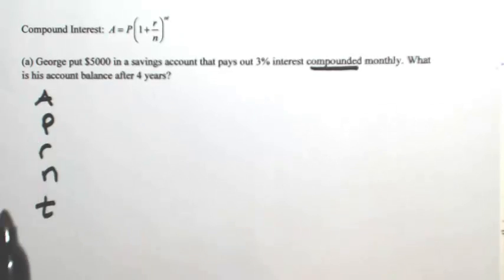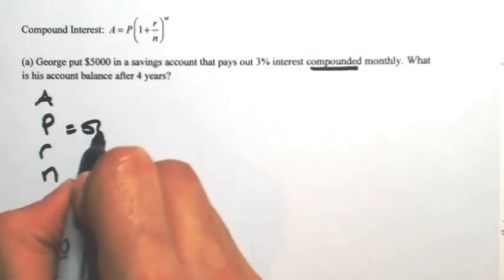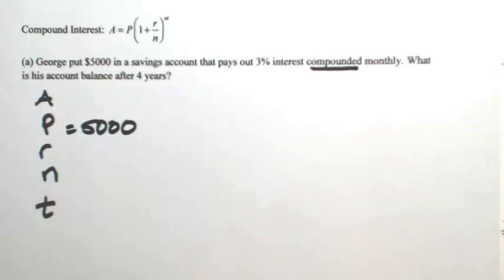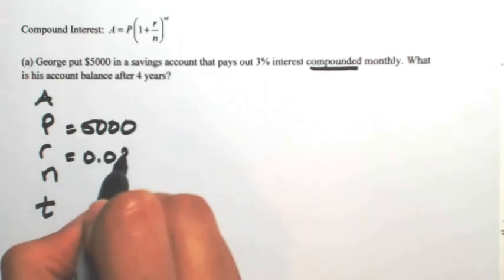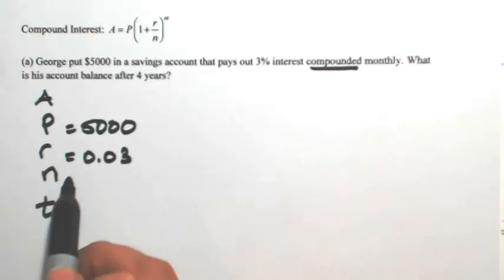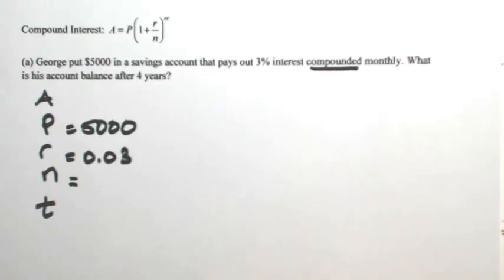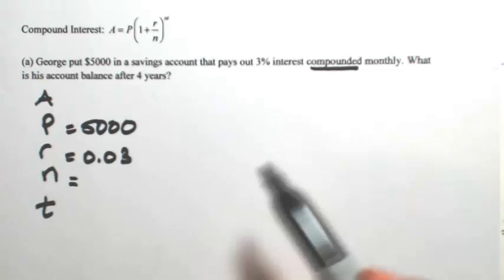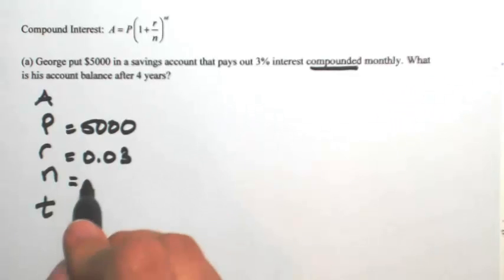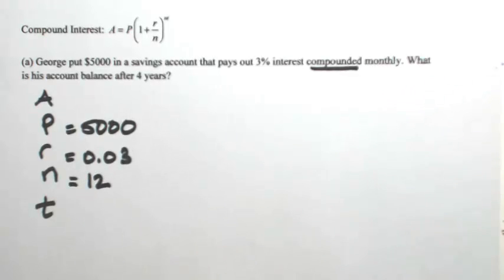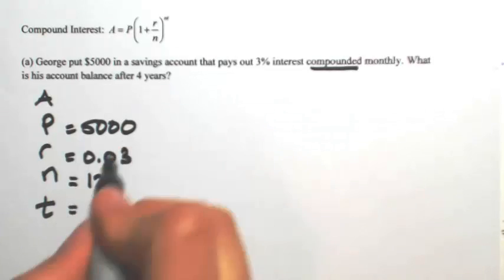The P is principal. So P is what you put in, so that's the $5,000. The R is the rate of interest, so that's told us as 3%, so as a decimal 0.03. N is the number of times that it's being compounded every year, not the entire time, just every year. So because it's being compounded monthly, then this is being compounded 12 times per year. T stands for the time, so this is being done for four years.